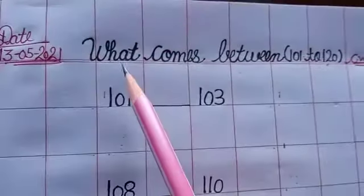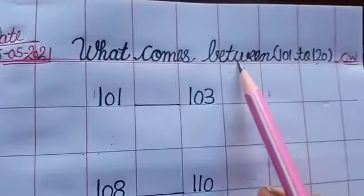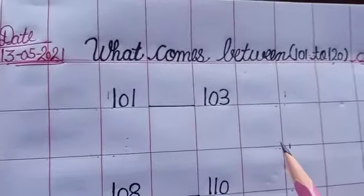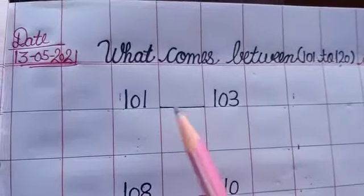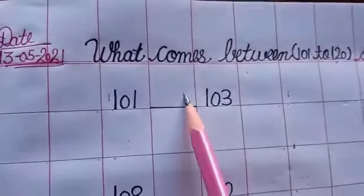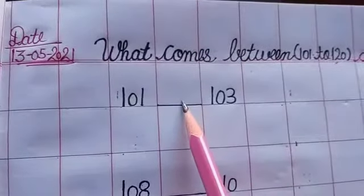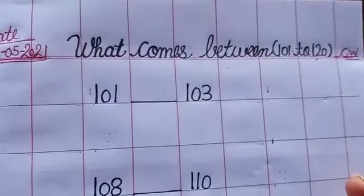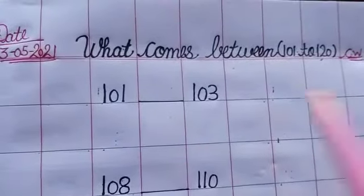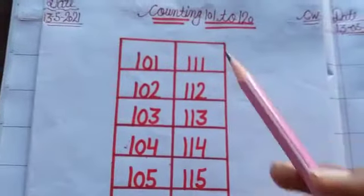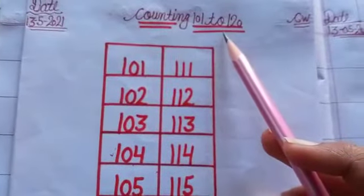Today we will do what comes between. Between number means the middle number. The middle number. Jo number beech mein aata hai. Students, now I am going to explain the concept of what comes between with the help of the counting from 101 to 120.